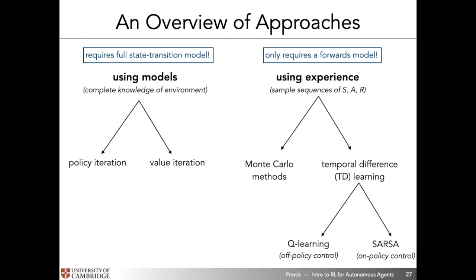What we did not talk about is how to solve problems when we do not have models of how the environment works. In those cases we are limited to sampling — we sample experiences by rolling out the environment dynamics. All we need for model-free approaches is a forwards model of how the environment would react. If we know how to unroll the environmental dynamics without necessarily having a model for it, we can sample experiences and compute values over those sampled experiences. There are two general classes: Monte Carlo methods and temporal difference learning, with TD learning specializing into either Q-learning or SARSA.